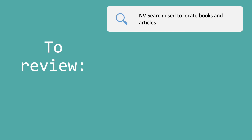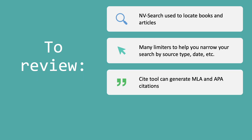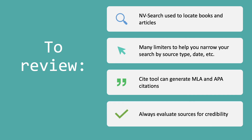To review what we learned in this video: NVSearch is used to locate books — both print and ebooks — and articles. There are many limiters you can use to help narrow your search, including narrowing by source type or by publication date. The cite tool can give you an automatic MLA or APA citation, but always double-check. And finally, always evaluate your sources for credibility before using them on a college research assignment.